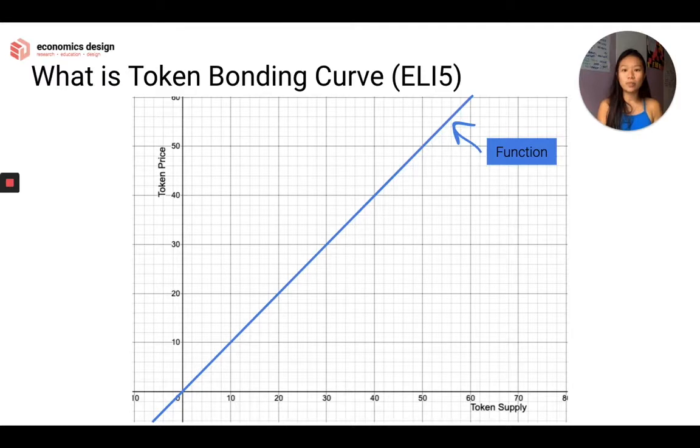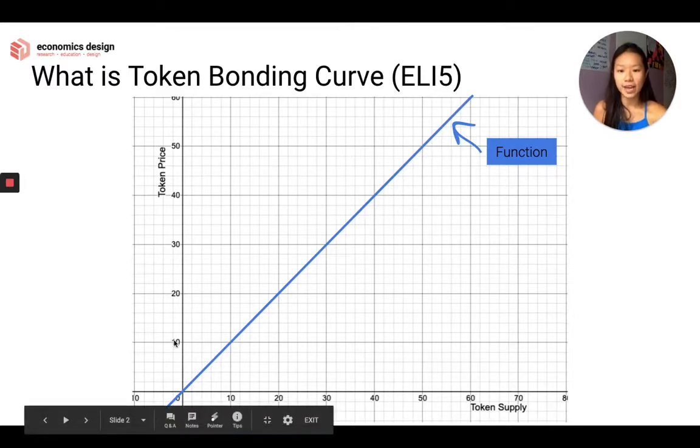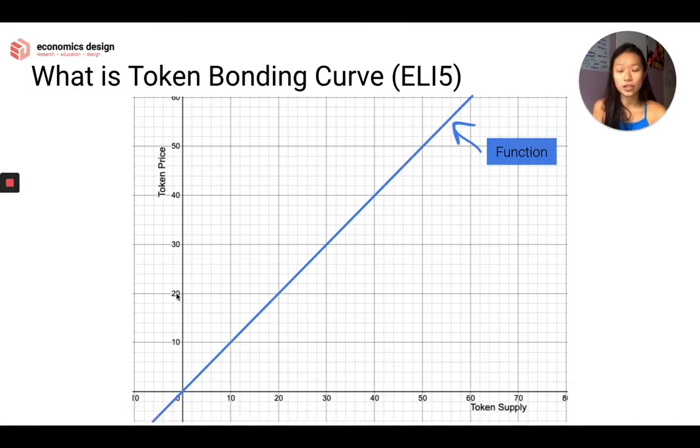This line is drawn by y equals x. So when y is 10 and you draw a line across 10, touch this function line, that you draw down, x is 10. When you draw x is 20, you draw all the way up to this function line, you draw across, you get 20, and y is 20. So x equals y. This is how we draw the function.